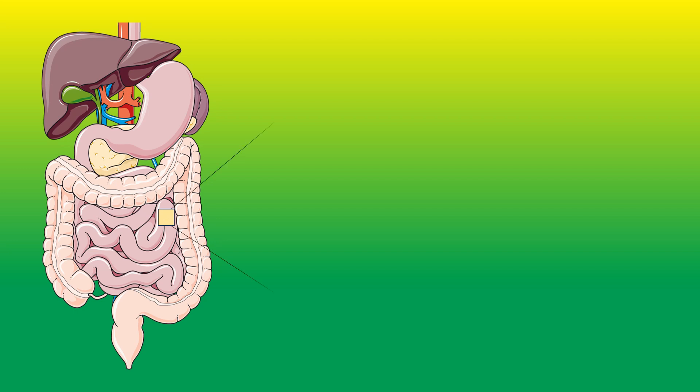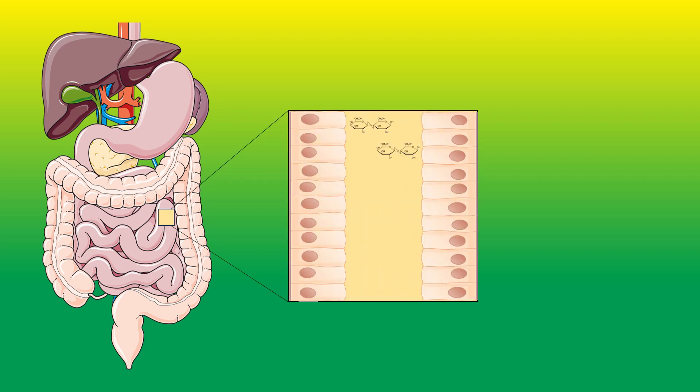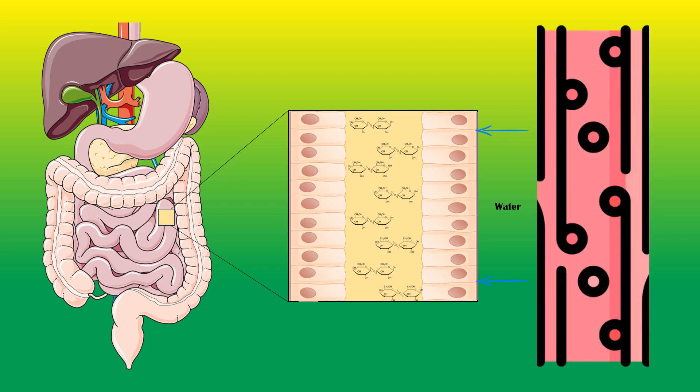When lactose cannot be broken down into its precursors, it accumulates within the small intestine. Lactose is an osmotically active compound, meaning that it drags water towards it from the nearby blood vessels supplying the intestines. Lactose within the intestinal lumen drags fluid and electrolytes towards it, giving rise to clinical features of lactose intolerance.